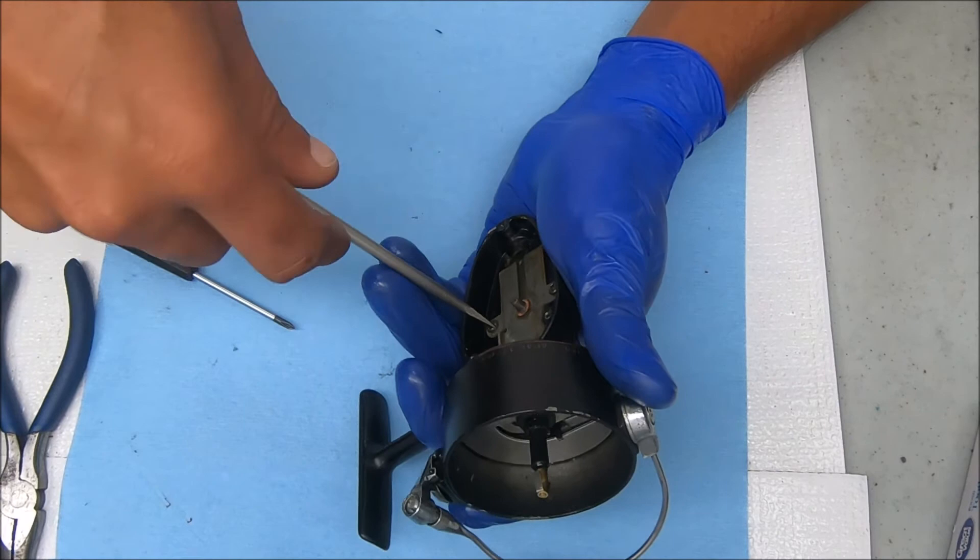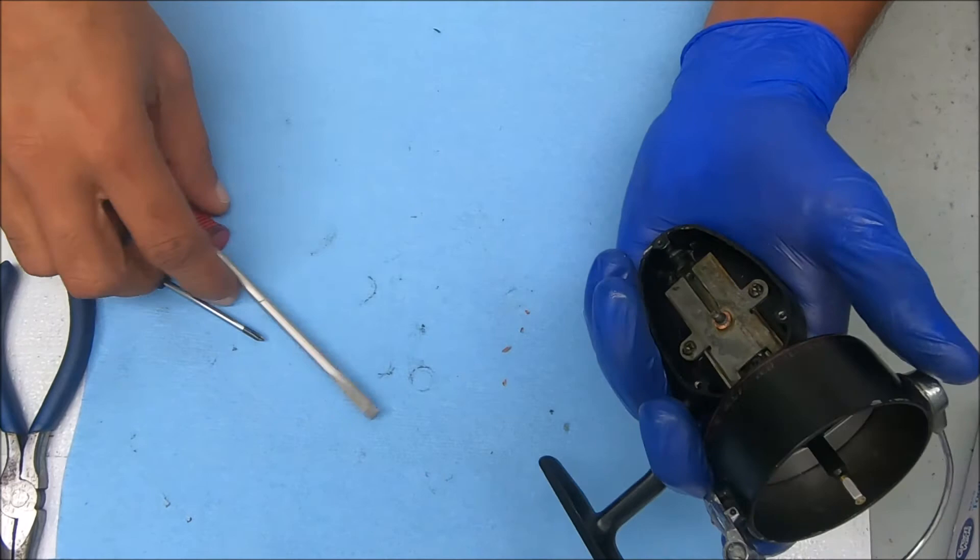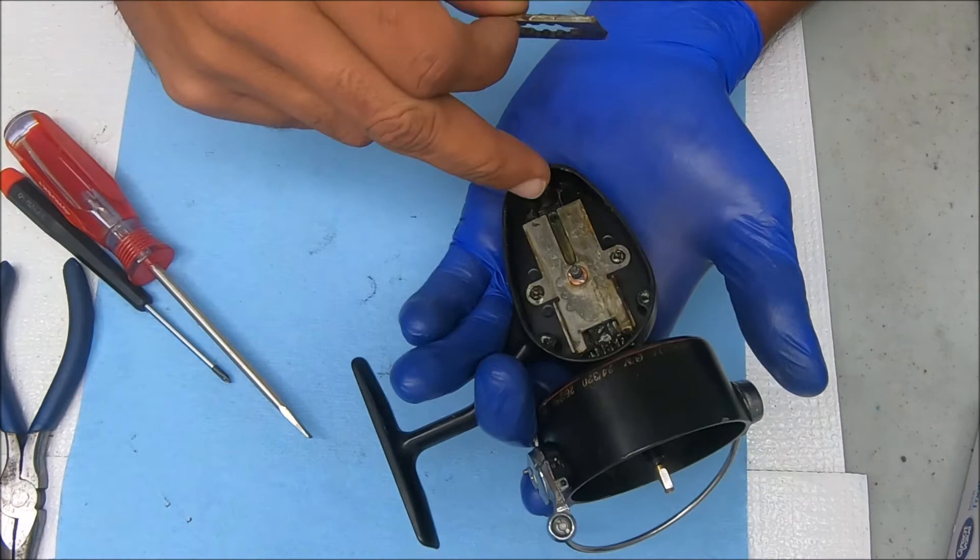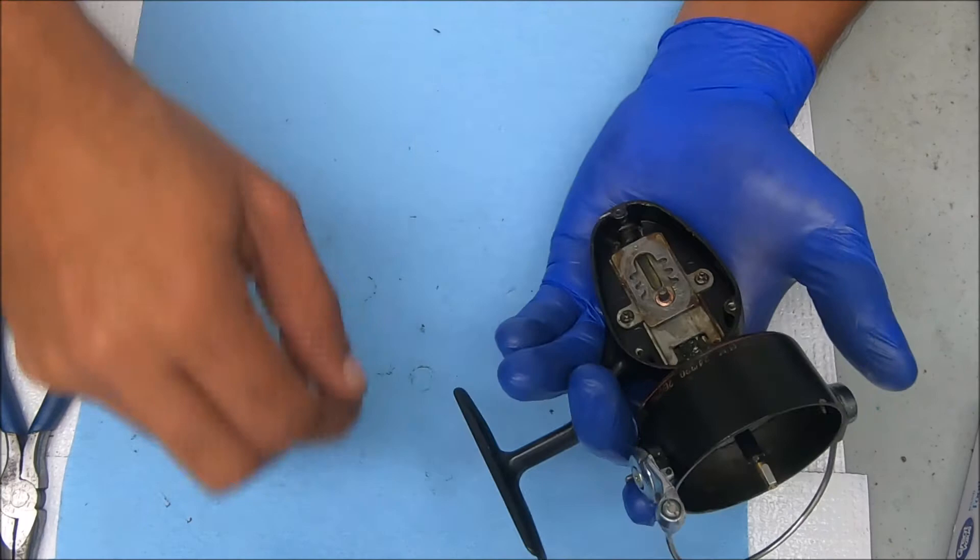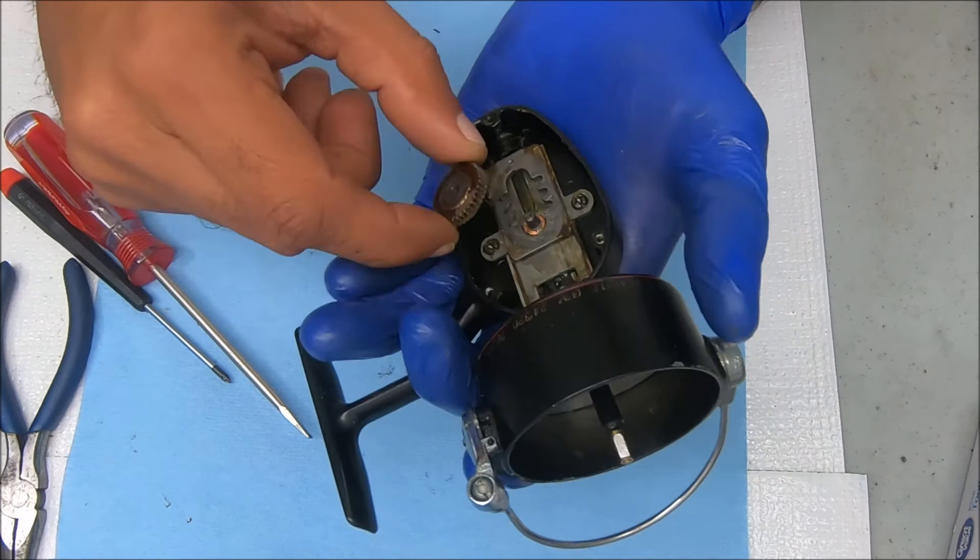Alright, next will be this piece here. That prong will be fitting inside that hole on the shaft like that. Then we'll take this piece. Those little tabs on the bottom there will be facing down. Let's push this up a little bit.